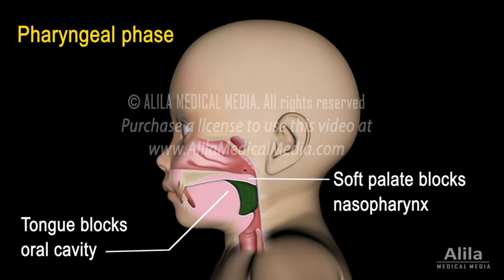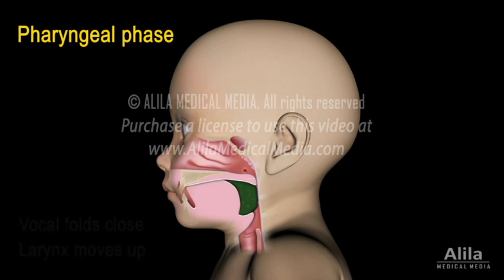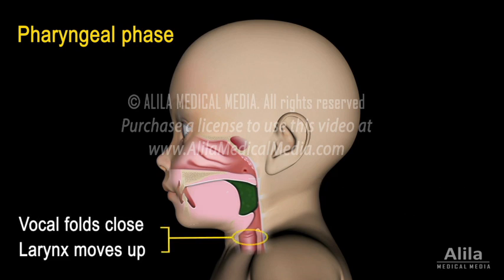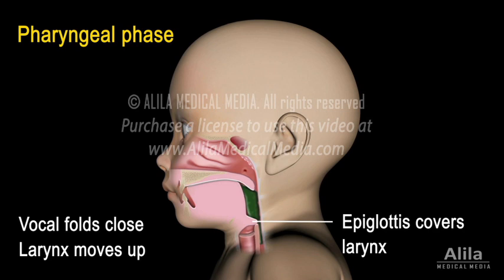The tongue blocks the oral cavity to prevent food from going back to the mouth. The soft palate blocks entry to the nasal cavity. The vocal folds close to protect the airway to the lungs. The larynx is pulled up with the epiglottis flipping over, covering the entry to the trachea — this is the most important step, since entry of food or drink into the lungs may potentially be life-threatening. The upper esophageal sphincter opens to allow passage to the esophagus.